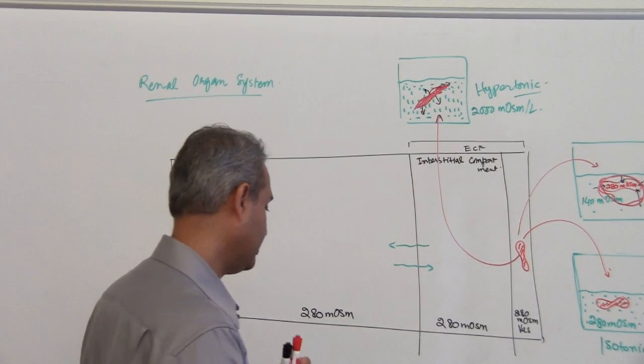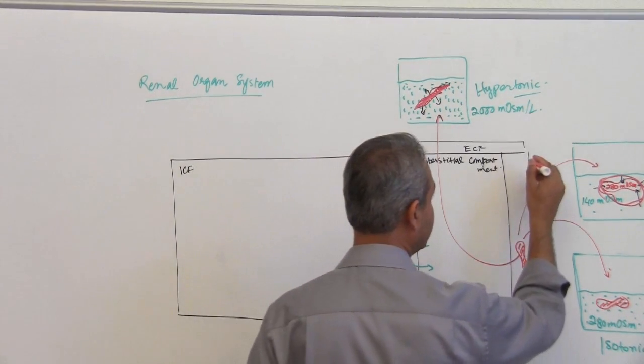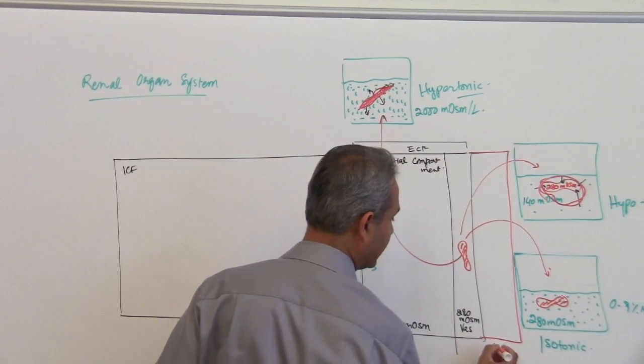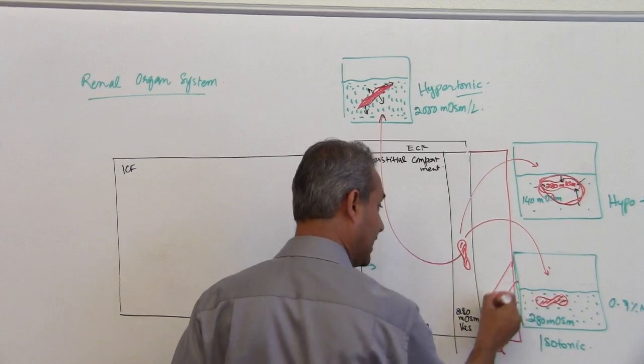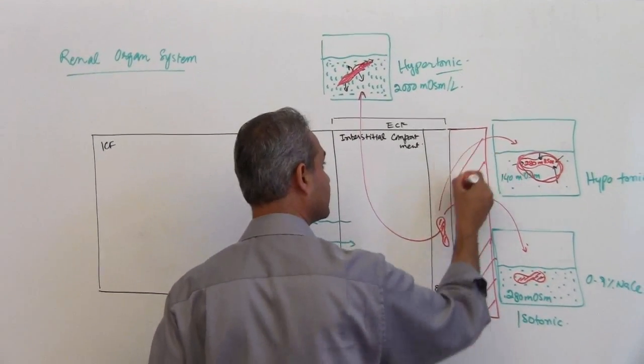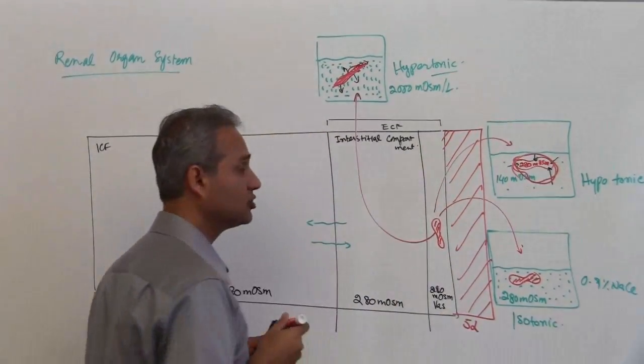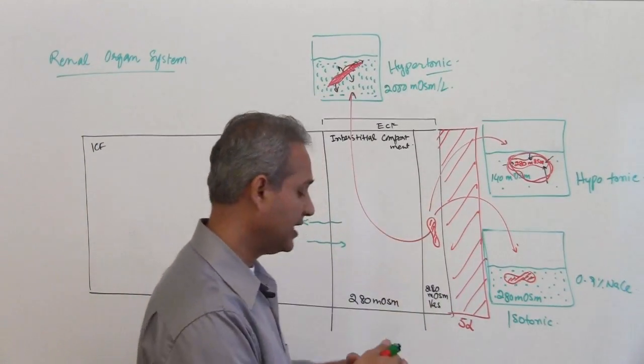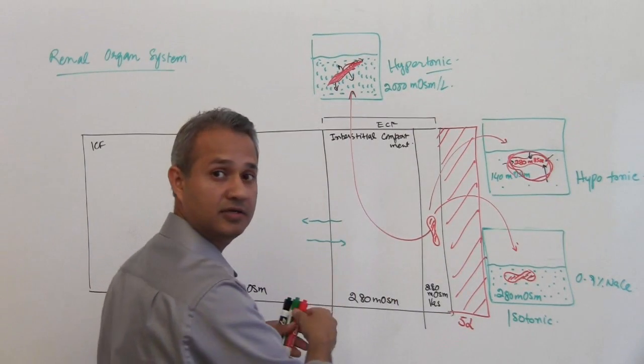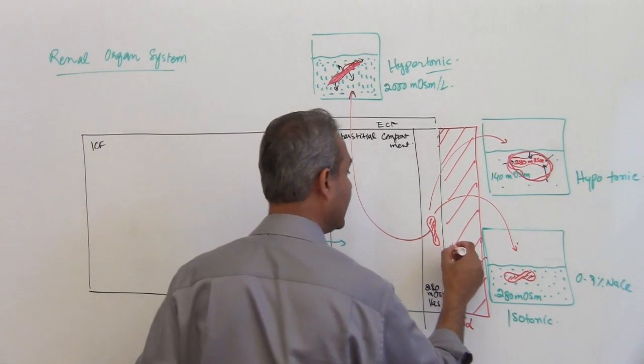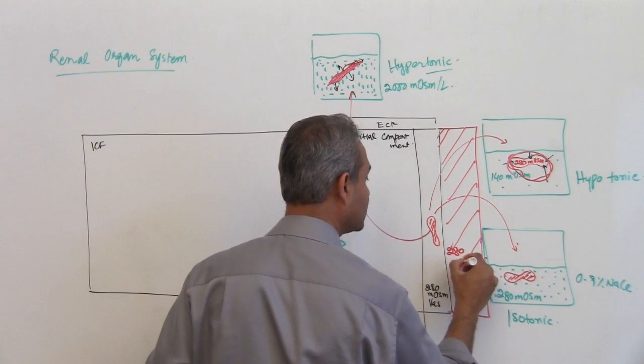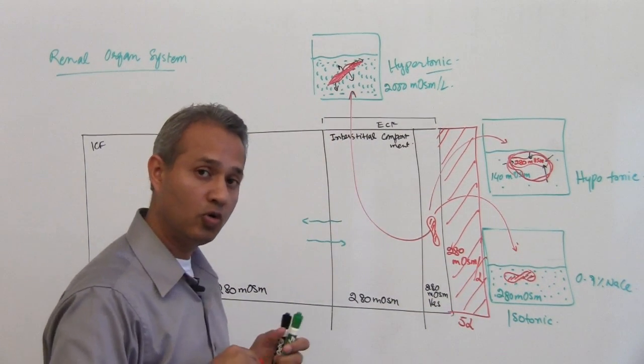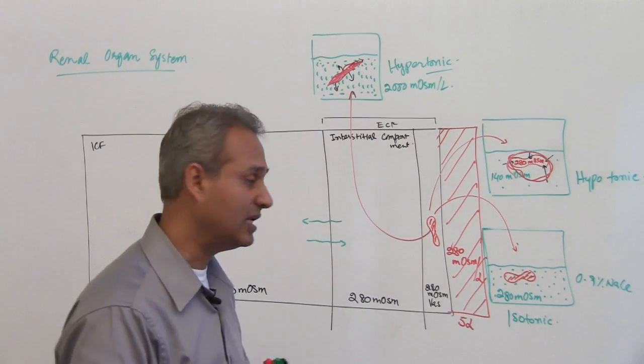What that means is if I added 5 liters of isotonic solution, isotonic solution will mean what? The concentration, the solute concentration in here is the same as the remaining. So that would mean 280 milliosmol per liter concentration, no water concentration will change.